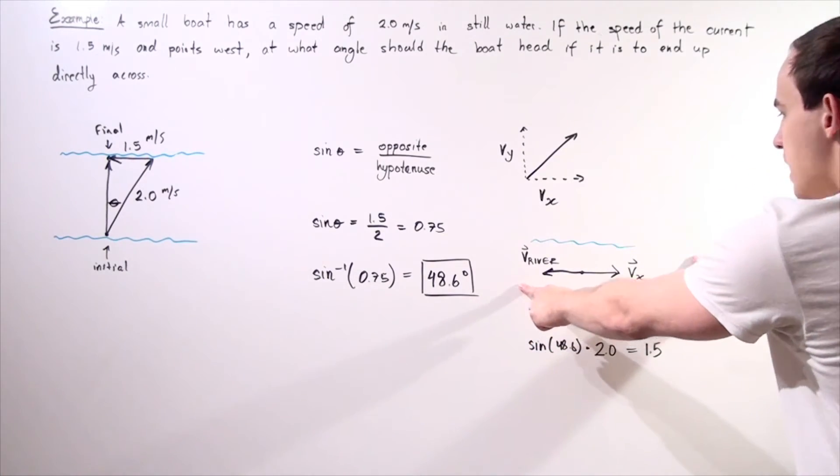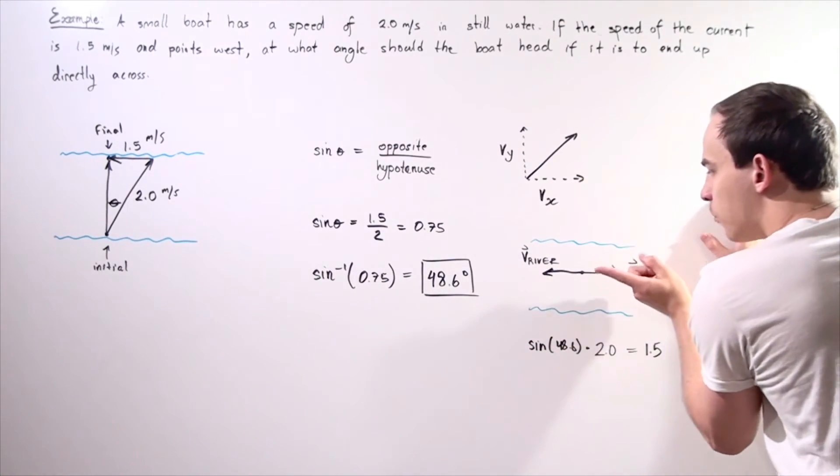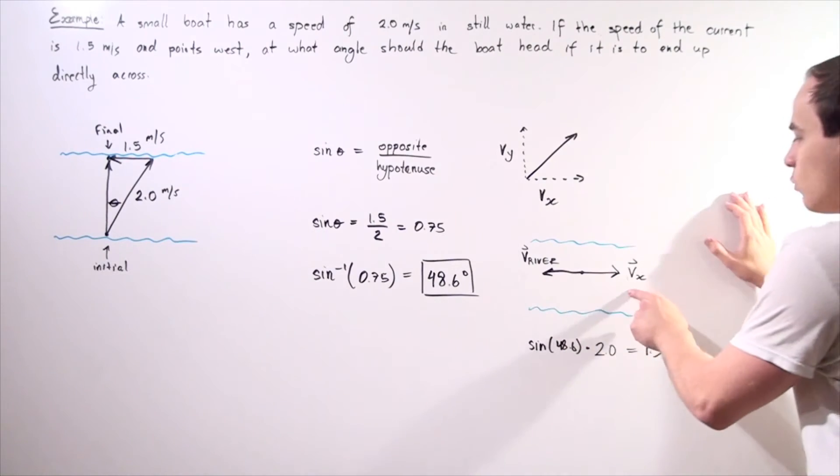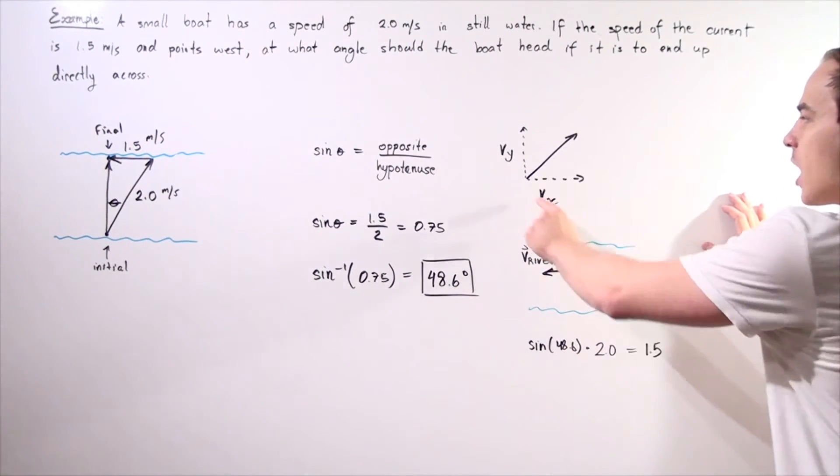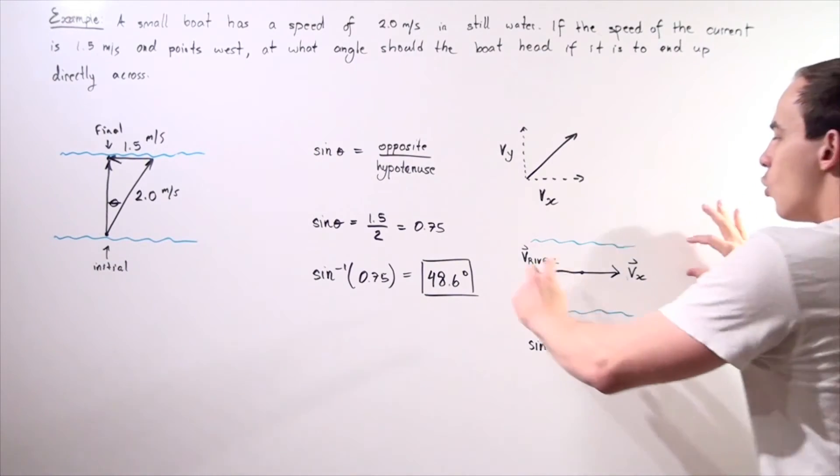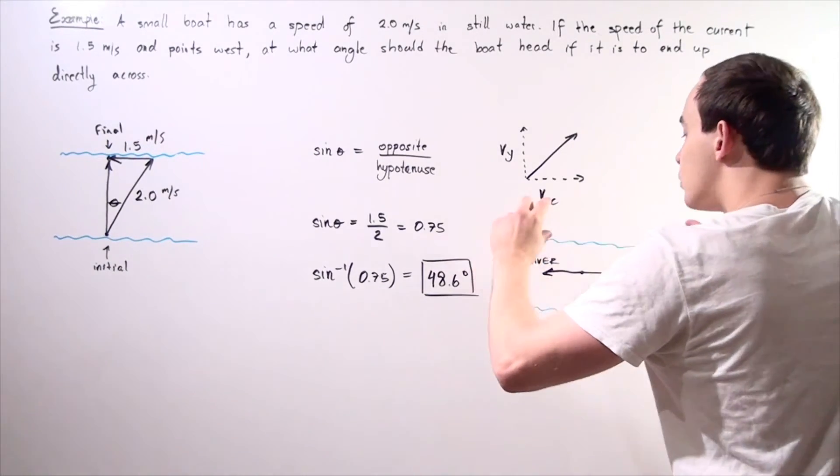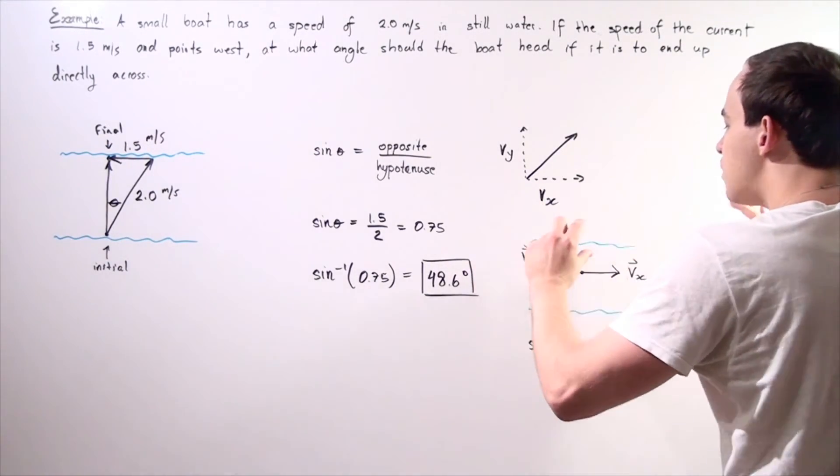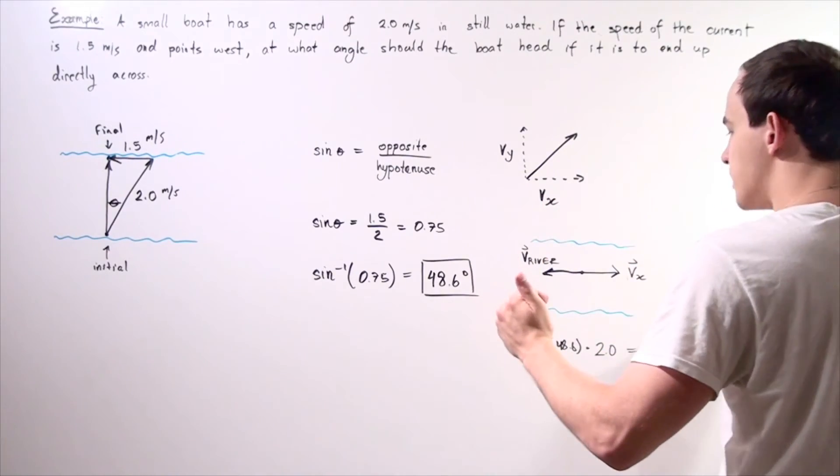Here we have the river. Here we have the current of the river pointing in this direction. Here we have our x component of our velocity vector pointing in the opposite direction. We want them to exactly equal so that they will offset one another.